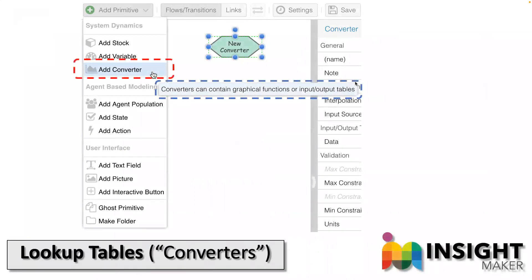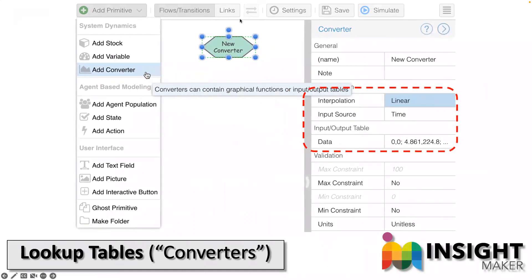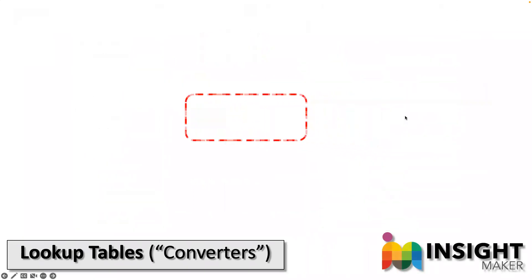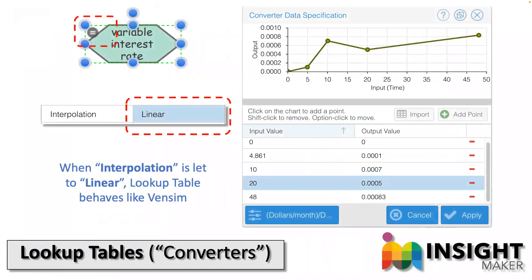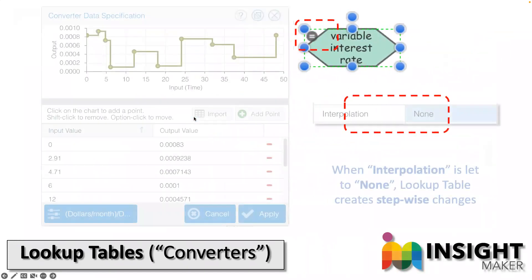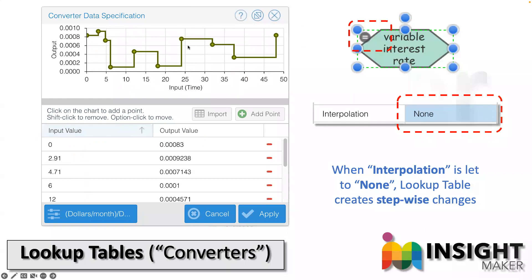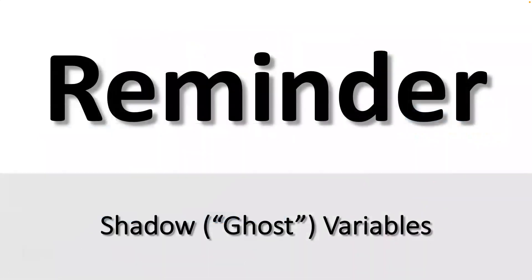Same thing in Insight Maker — you'll add a converter, which is that funny little shape. You can choose its input source to be something other than time, and you can choose its interpolation to be linear — making it just like VinSim — or 'none,' which gives a stepped look where each point holds its previous value until the next point.